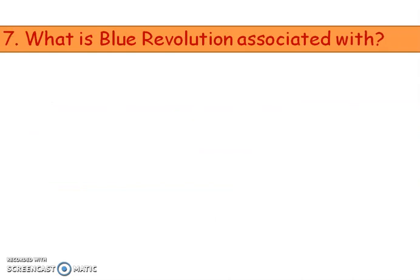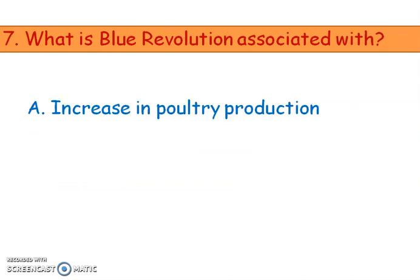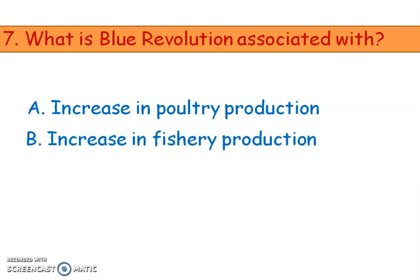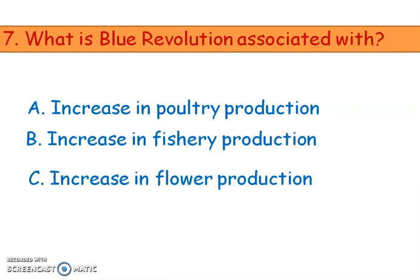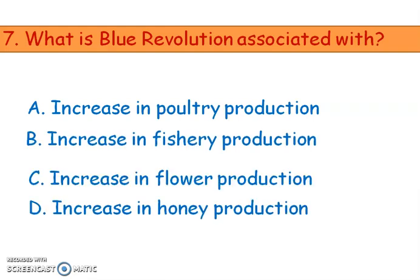Next question: what is the Blue Revolution associated with? Options are increase in poultry production, increase in fishery production, increase in flower production, and increase in honey production. The right answer is option B, increase in fishery production.